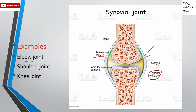The main examples of the synovial joint are the elbow joint, shoulder joint, and knee joint. You can remember that these three joints — elbow, shoulder, and knee — are freely movable joints, so all synovial joints are always freely movable. The main function of the synovial joint is that it reduces friction between the bones, because of the presence of synovial fluid.